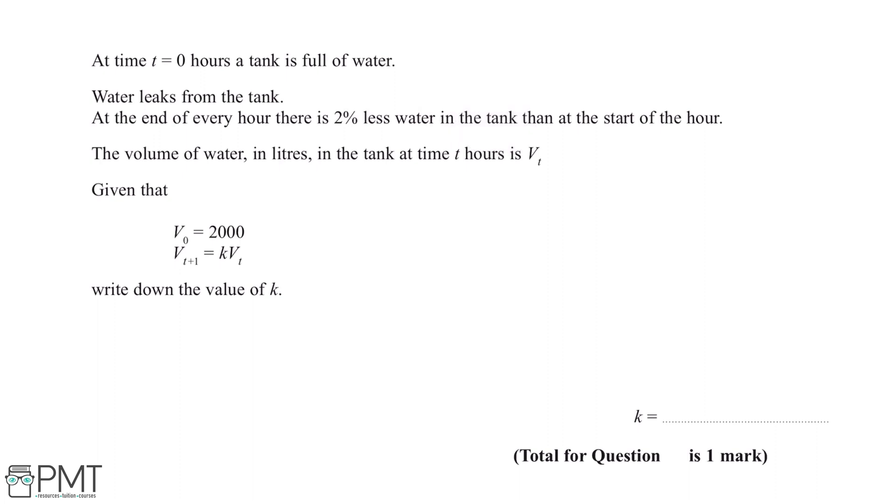The volume of water in litres in the tank at time t hours is Vt. Given that V0 equals 2000, Vt plus 1 equals K multiplied by Vt, write down the value of K.